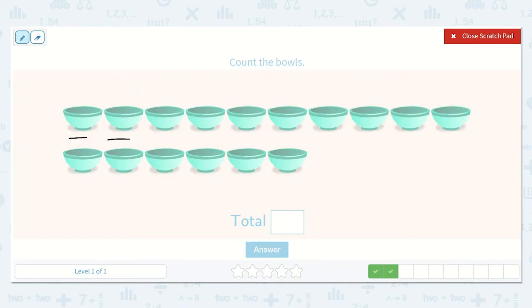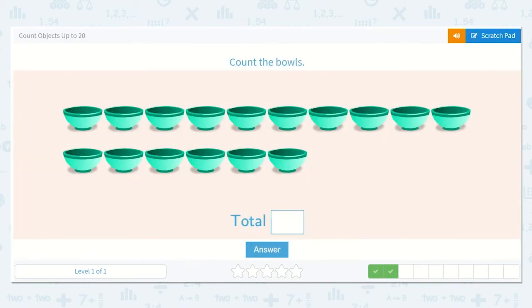1, 2, 3, 4, 5, 6, 7, 8, 9, 10, 11, 12, 13, 14, 15, 16. So the total is 16. The total is 16. That is a 1 and a 6.